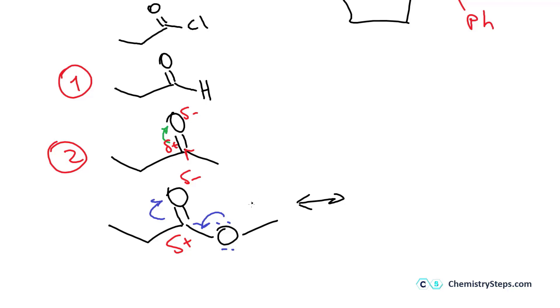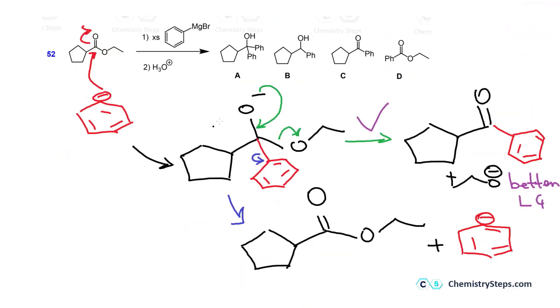So the reason we mentioned this is in the first addition when we do the Grignard, remember, after we have the first addition, we have the ketone now. And once the ketone is formed, there is no reason for it to not react with another equivalent of the Grignard, because this now is more reactive than the starting material.